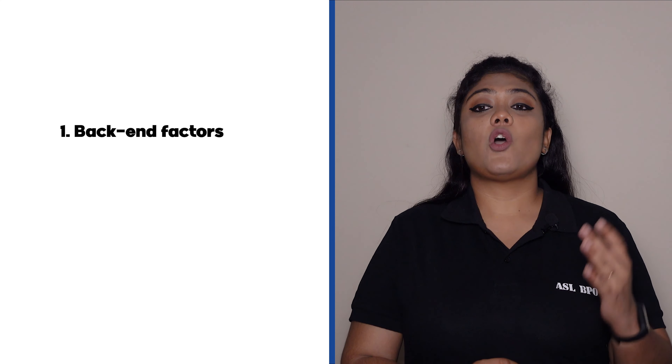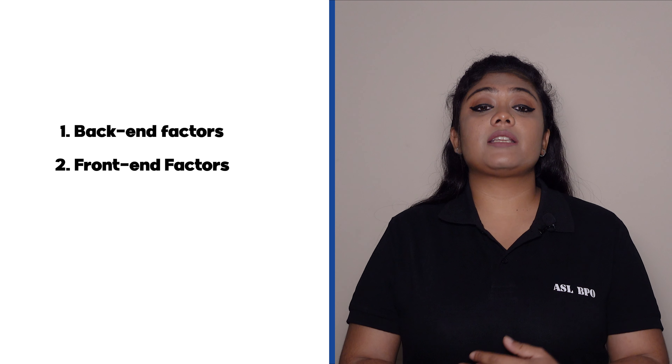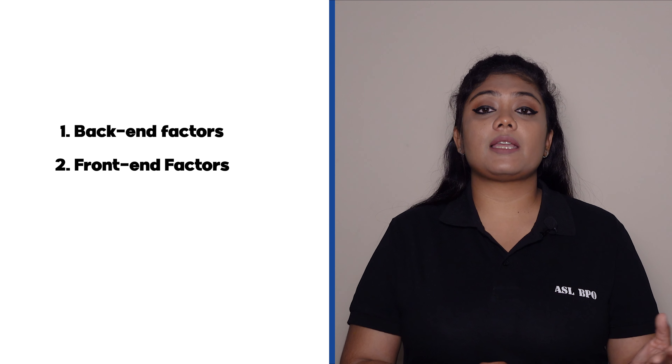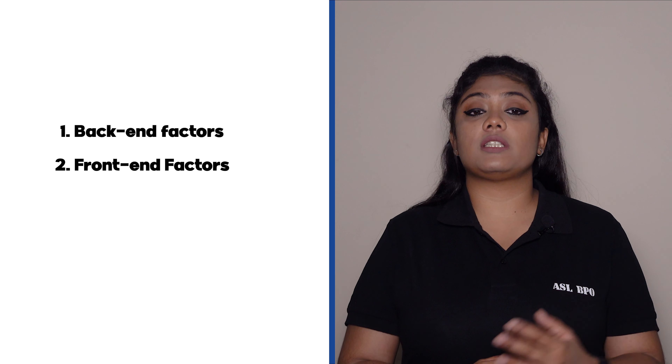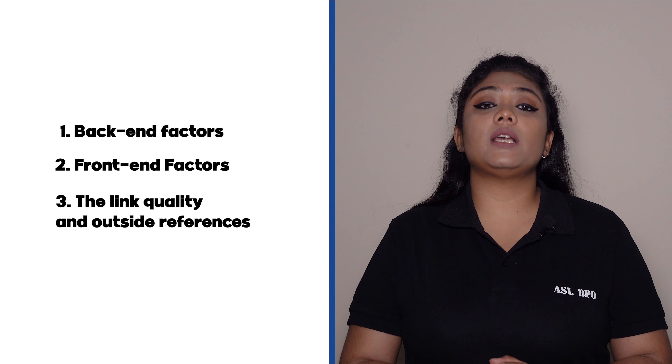What are the key elements of a technical SEO audit? The main three factors that we need to see during the technical SEO audit are: back-end factors like hosting or indexing; front-end factors like keywords, metadata, or content; and lastly, the link quality and outside references. The 80-20 rule should be applied when deciding which audit insights to take action on — 20% of the invested input is responsible for 80% of the results obtained.